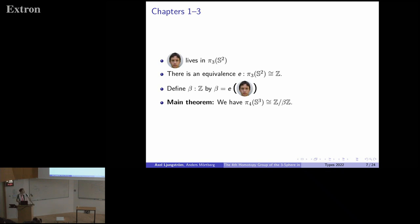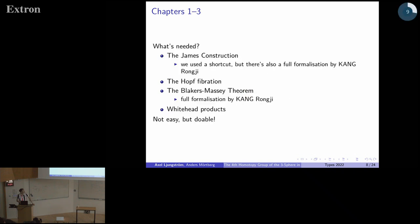Brunerie's main theorem in chapters one to three is that Pi 4 of S3 is Z mod beta. That's great. We're almost there. For this part of the proof, we need some stuff. We need something called the James construction. We sort of cheated a bit and proved a special case of it. But later, a guy called Kang Rogi proved the full theorem.